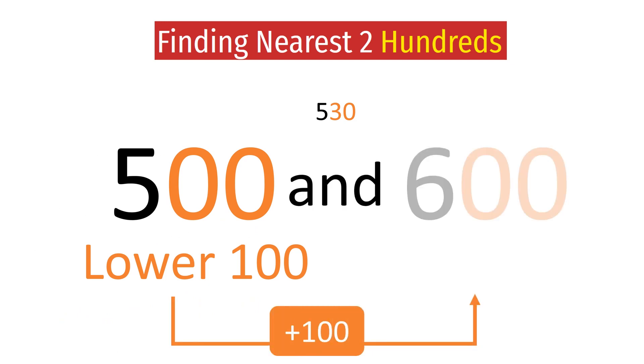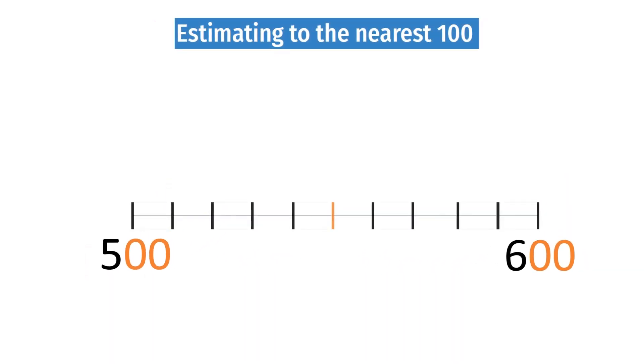Adding 100 to this lower 100, we get the upper 100, which is 600. So we get the lower and upper 100s.